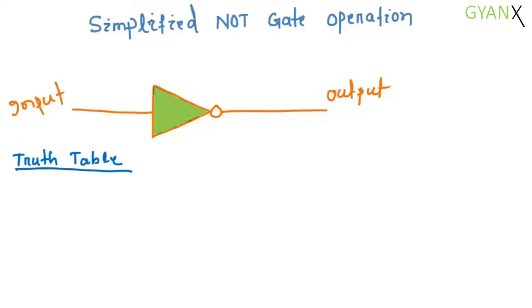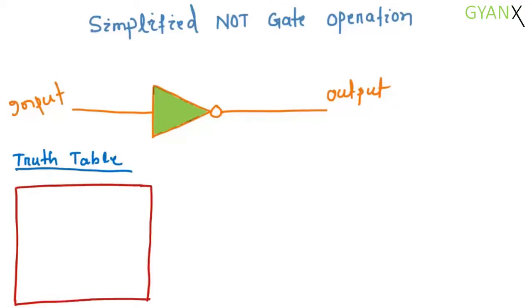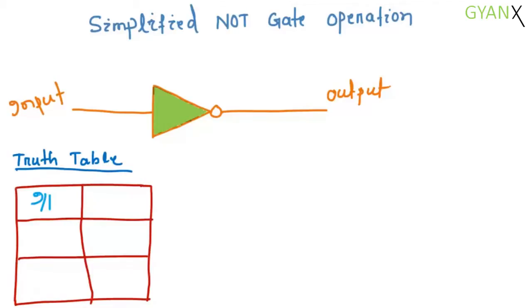Now, let's see the truth table of the NOT gate. A truth table is a mathematical table used in logic to compute the functional values of logical expressions.